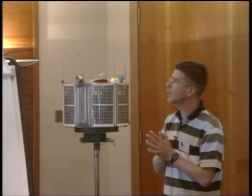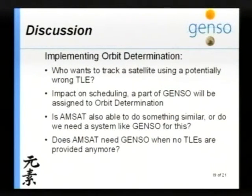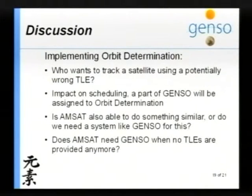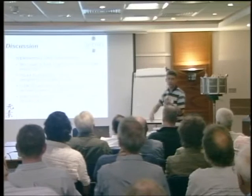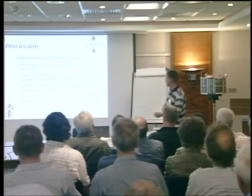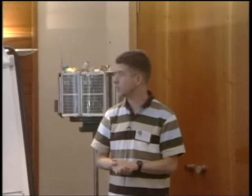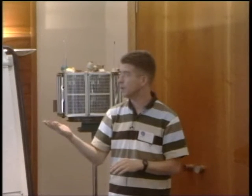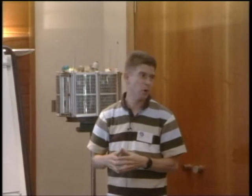To finish with discussion: when implementing orbit determination, one question is who wants to track a satellite using a potentially wrong TLE? You're sending out wrong TLEs, and you don't want to spend a week tracking a satellite that isn't there — that's a thing to solve. It has some impact on scheduling, because you're taking away ground stations from GENSO's task of collecting telemetry data and using them for orbit determination. Another question is whether MSAT can do something similar, or whether we need a system like GENSO when NORAD no longer provides TLEs.